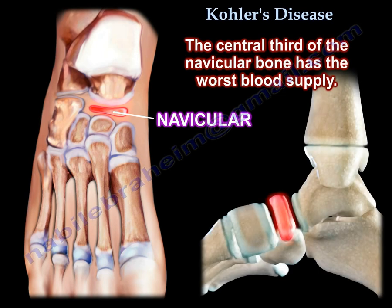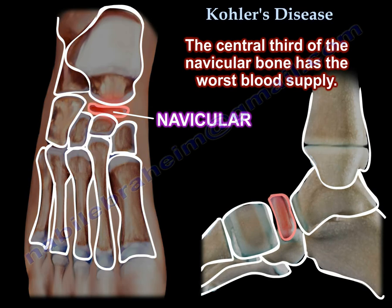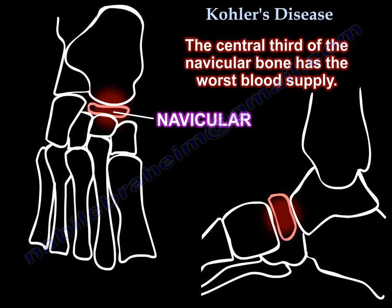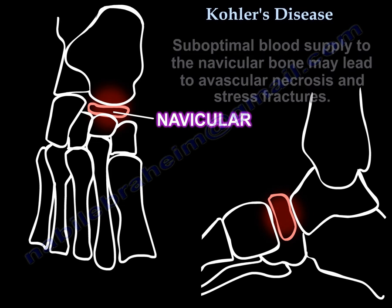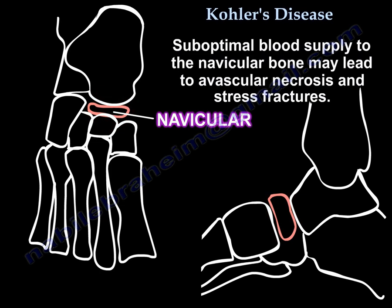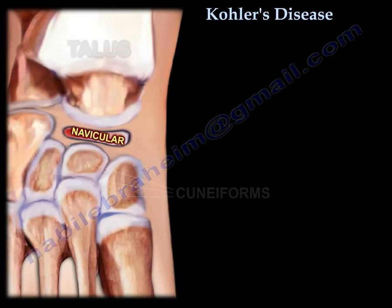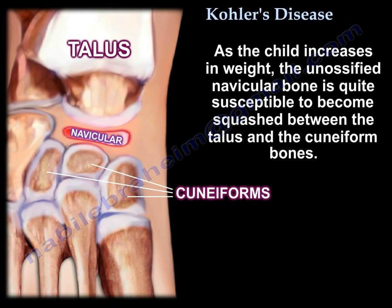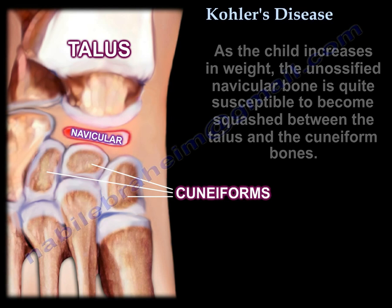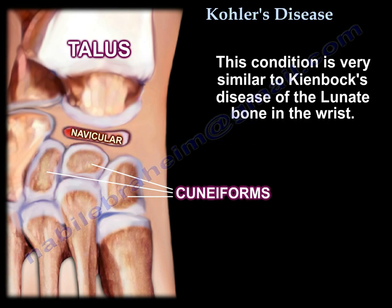The central third of the navicular bone has the worst blood supply. Suboptimal blood supply to the navicular bone may lead to avascular necrosis and stress fractures. As the child increases in weight, the unossified navicular bone is quite susceptible to become squashed between the talus and the cuneiform bones. This condition is very similar to Kienbock's disease of the lunate bone in the wrist.